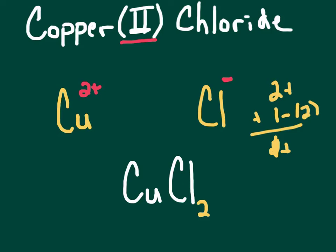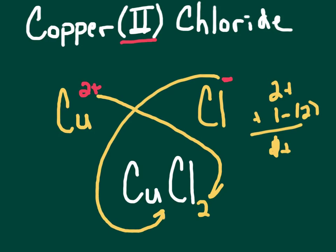Another way you can look at this, and it's a shorter way, is you can bring your 2 down here and drop the plus sign. And you can bring your 1 here and drop your minus sign. You can bring the charge down, flip, or reverse it. That works a lot of times. It's a shortcut. It helps, but it's not always correct. So, your correct formula here is CuCl2.